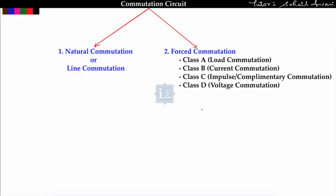In the previous lecture, Lecture 31, we covered Class C commutation, also known as impulse or complementary commutation. In this lecture, Lecture 32, we will start Class D commutation, which is the voltage commutation. This is very important because till now, questions in the GATE exam have been framed from Class D commutation only.